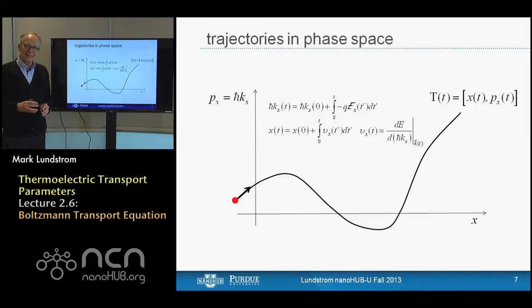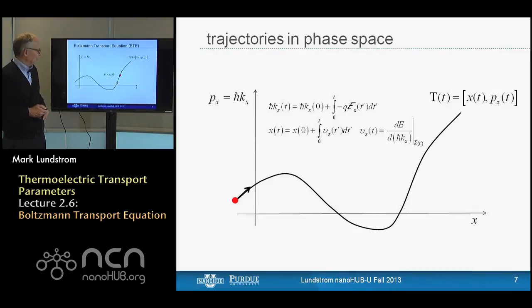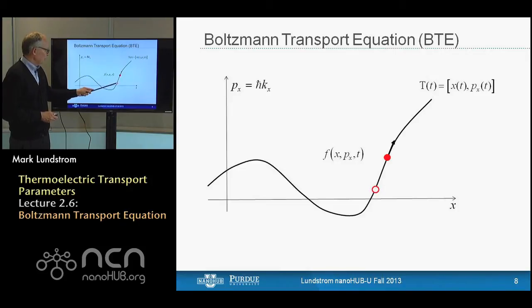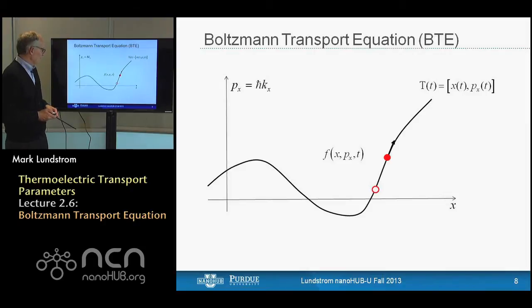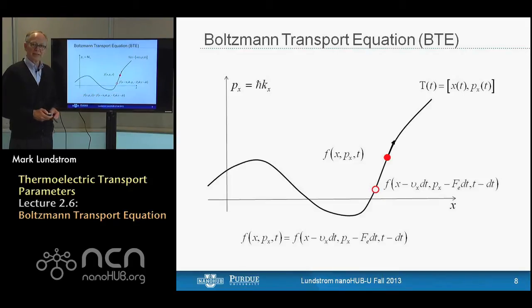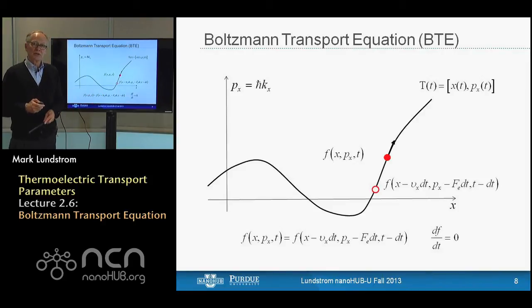The Boltzmann equation is a semi-classical equation. The quantum mechanics is embedded in the electronic band structure, but we think about electrons as semi-classical particles. We can write an equation of motion in momentum space that looks like Newton's equation: dh-bar dk is like derivative of momentum with respect to time, and classically that should be the force — minus the gradient of the bottom of the conduction band. For now, we'll think about the force as being due to an electric field in the sample.